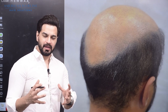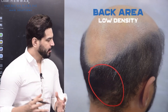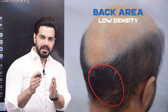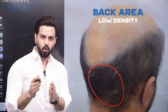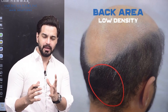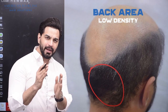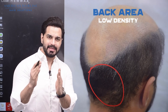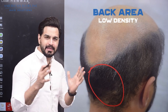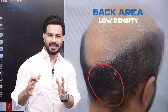Now let's talk about his back area. His density is quite low on the back. His length is a little long, which actually helps. Always remember: if your density is low on the sides and back, many people think they should keep the sides and back very short before putting on the hair system — that's not a good idea. Always try to keep a little length, because that length will give you a little more density and coverage.